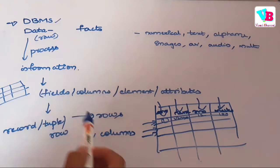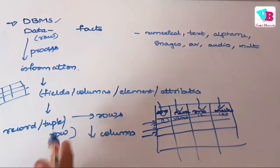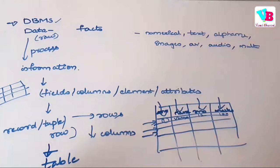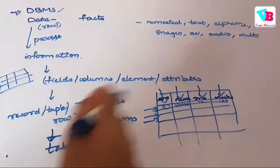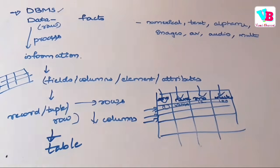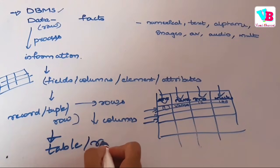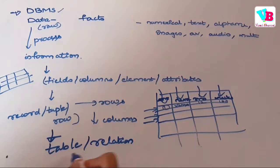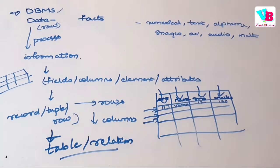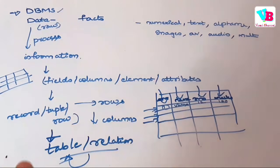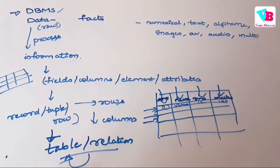The collection of these fields and rows together forms a table. A table is also called a relation in database management system terminology. So a relation is nothing but a table.